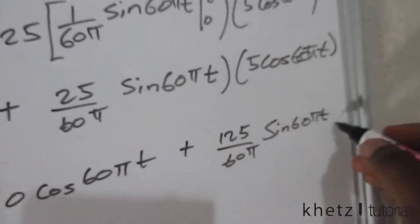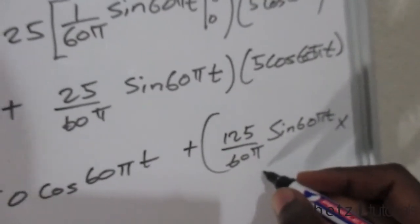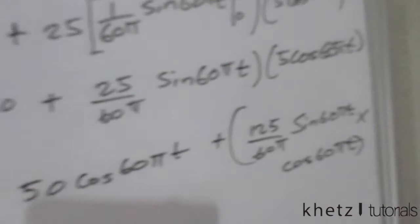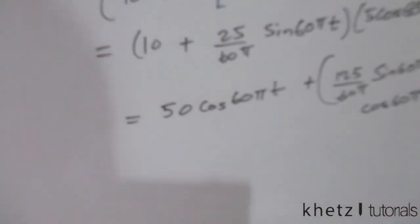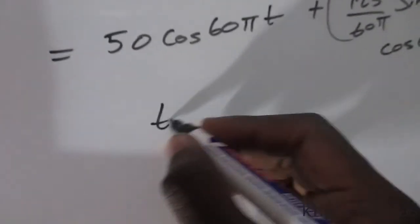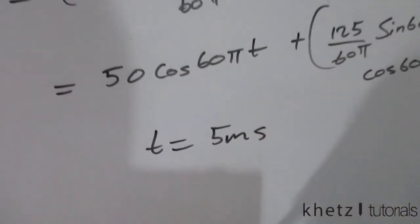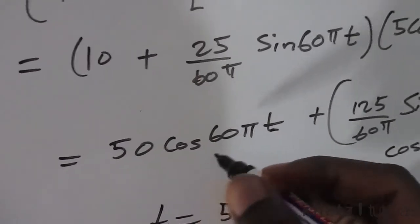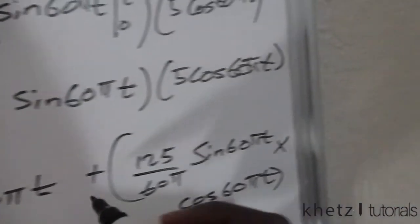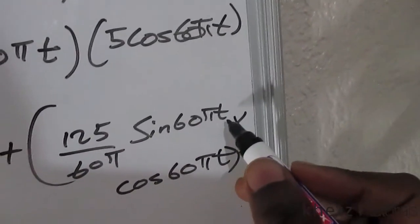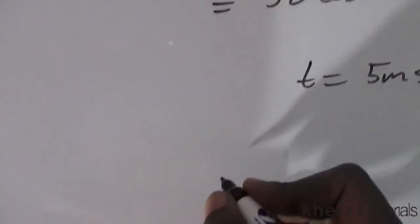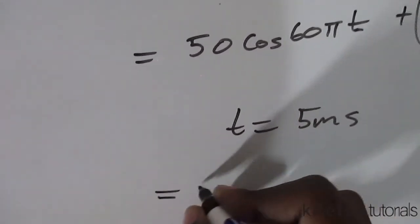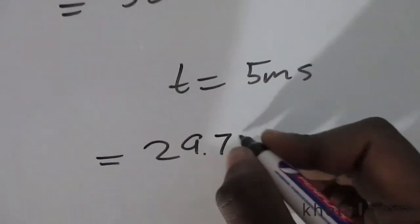Multiplied by cos 6πt. The answer at time equals to 5 milliseconds, just basically substitute 5 milliseconds everywhere where you see t, and the final answer should be 29.7 watts.